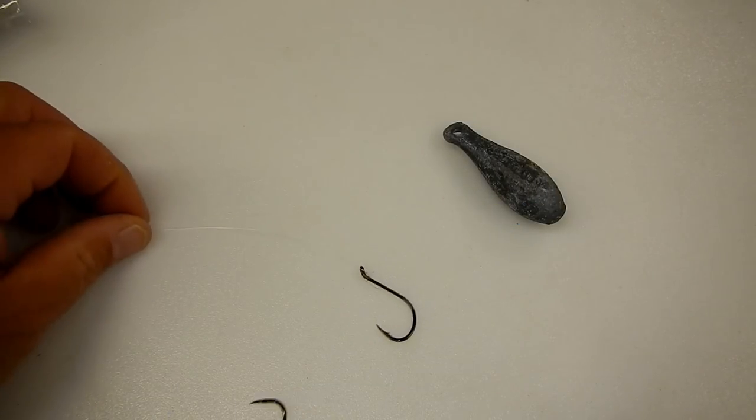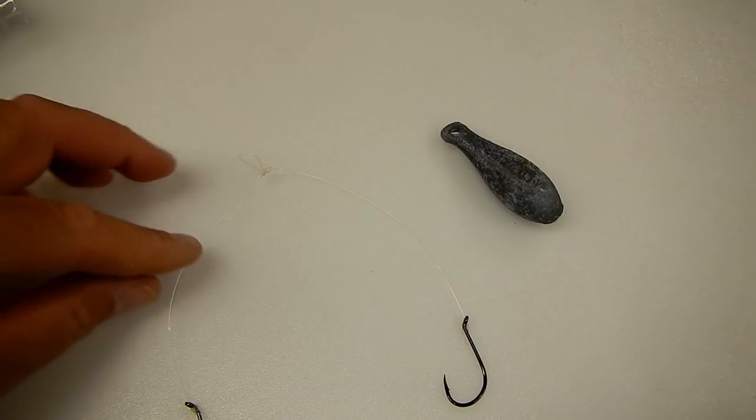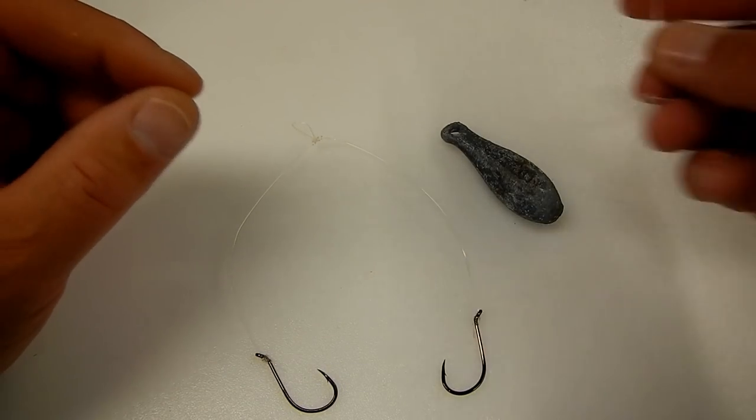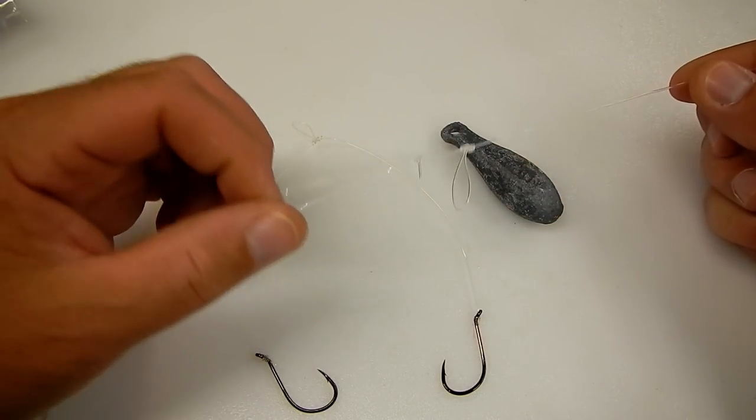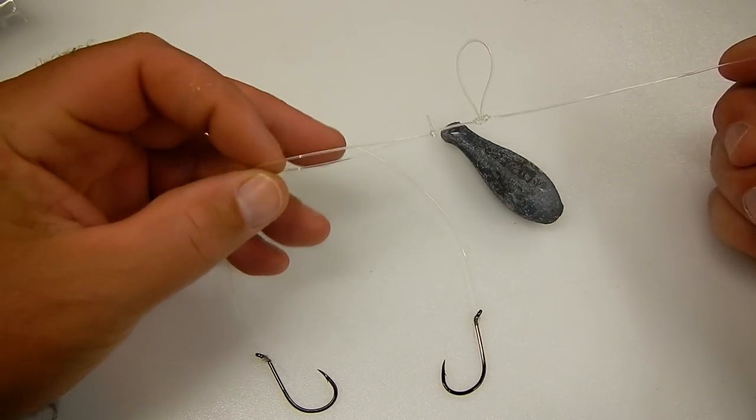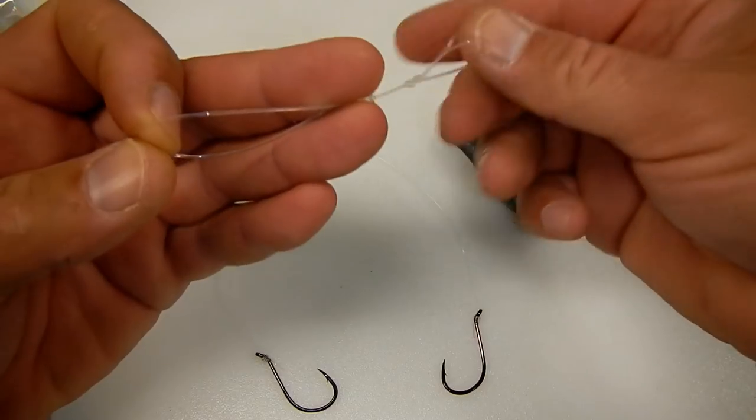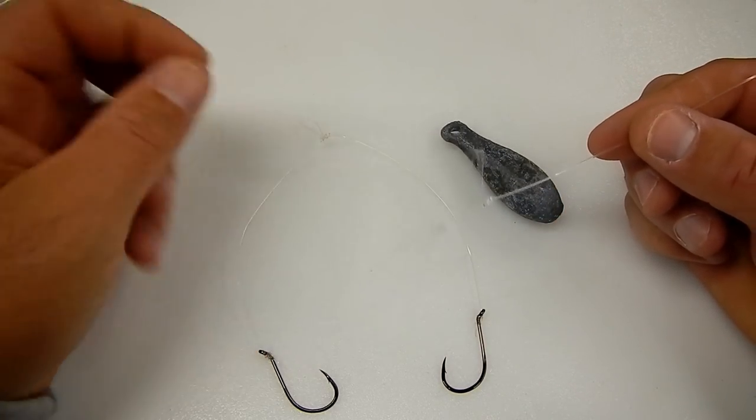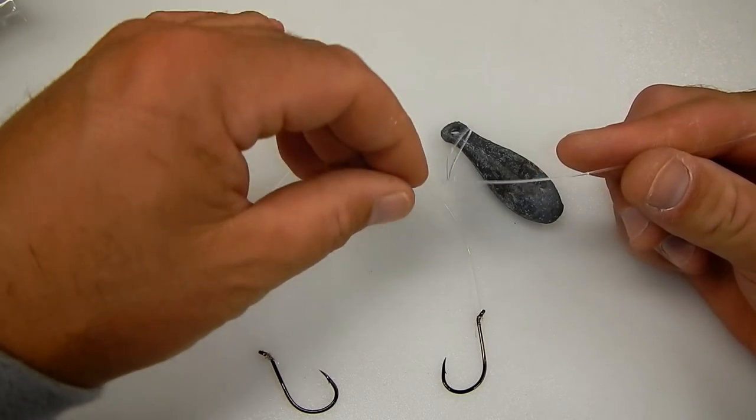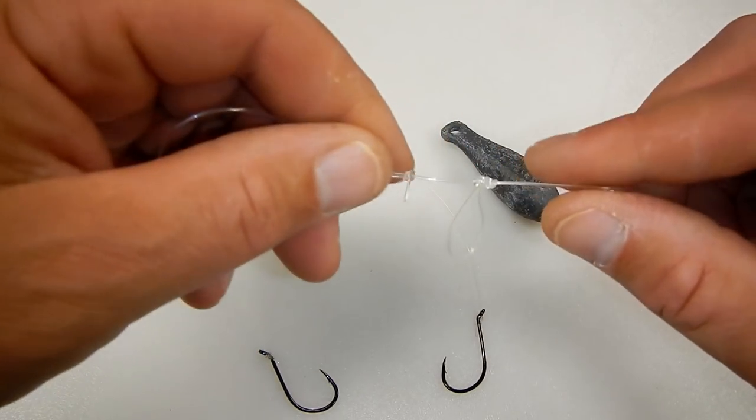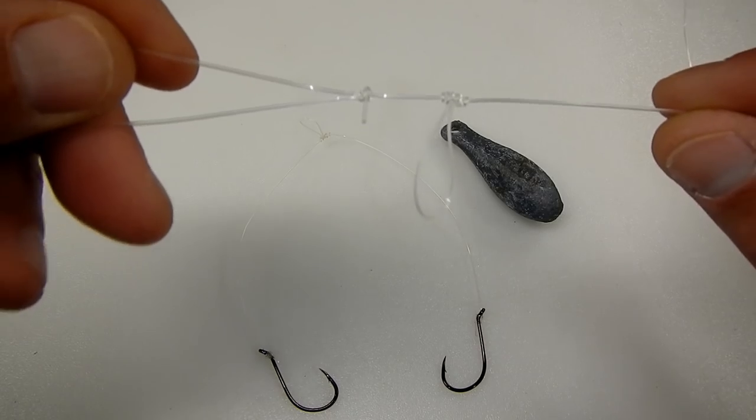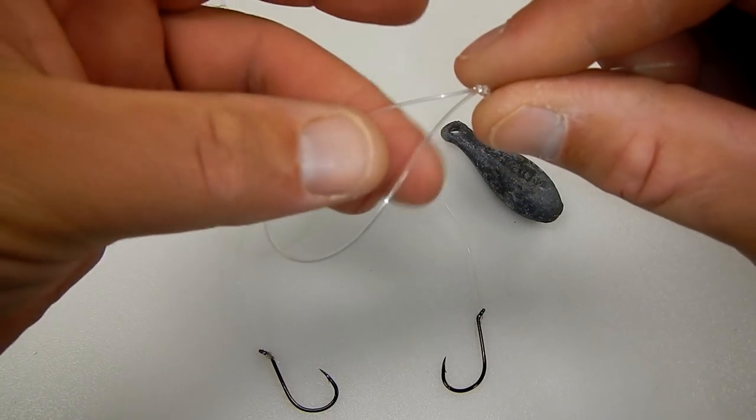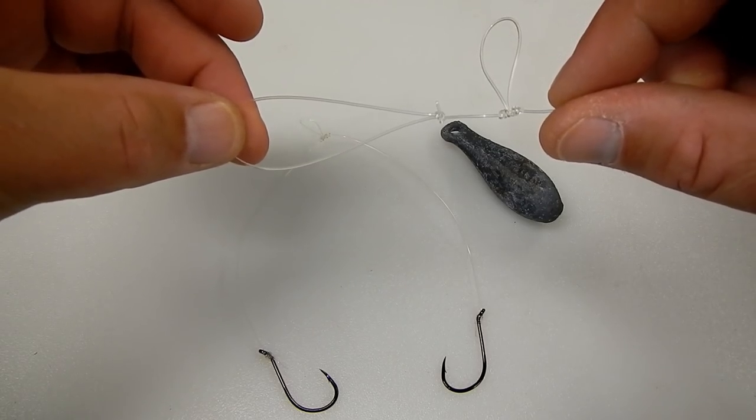Now that we have our snafu rig complete with the two hooks, I'm going to show you guys how to hook it to the main line. This is coming off my blackfish rod. This again is 50 pound leader, just plain old leader material. So what you want to do is you want to have a dropper loop in your main line followed where your weight is going to go, a perfection loop making the loop here.